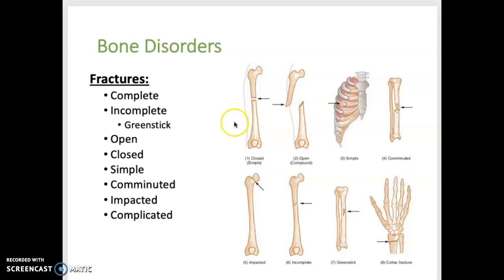A complete fracture is when a bone is broken into two separate pieces. An incomplete fracture is when a bone is not broken all the way through. One type of this is called a greenstick fracture, when a bone bends on one side but breaks on the other side. That's most common in children because their bones are a little bit more flexible.